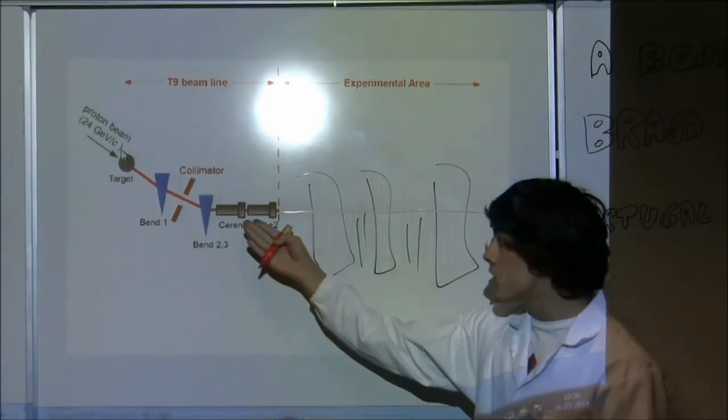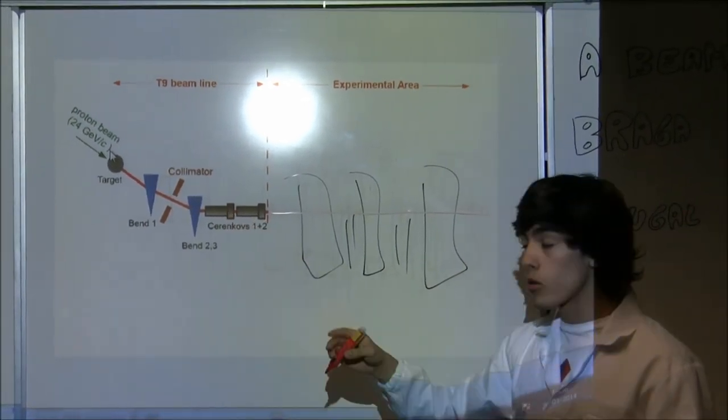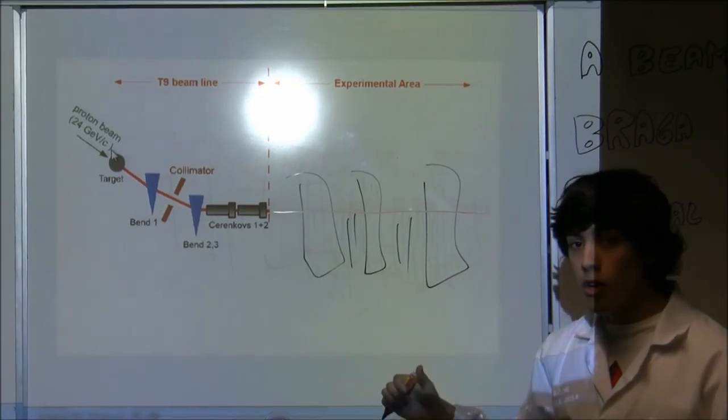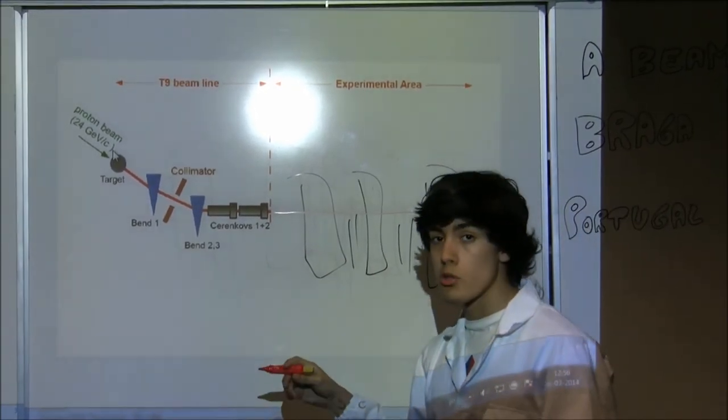By applying different energies to this proton beam line we expect to get different data from the particle detectors. Therefore controlling better the phantoms absorption power.